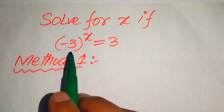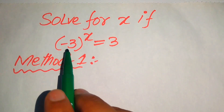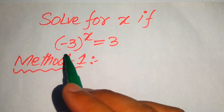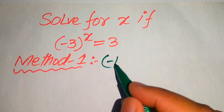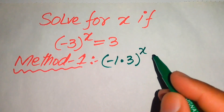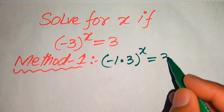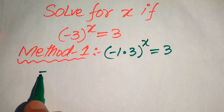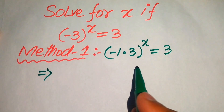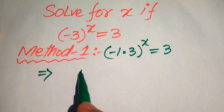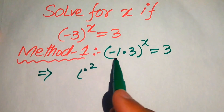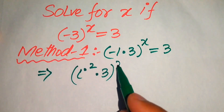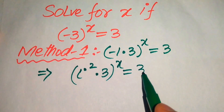In the first method, we have minus 3 times x, and we write it as minus 1 multiplied by 3, with the whole raised to the power x, and this equals 3. We know that minus 1 equals iota squared when we convert this into complex form. So minus 1 equals iota squared, and we have 3 with the whole power x equals 3.